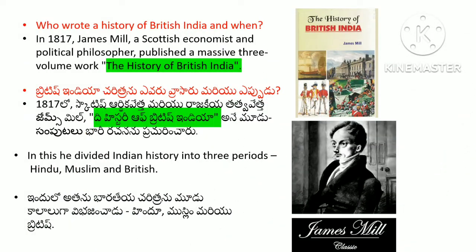Who wrote A History of British India? In 1817, James Mill, a Scottish economist and political philosopher, published a massive three-volume work titled The History of British India.